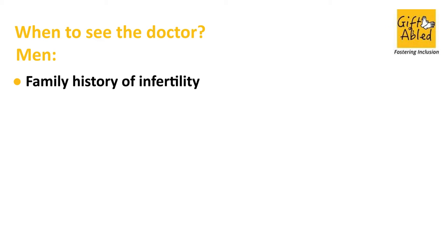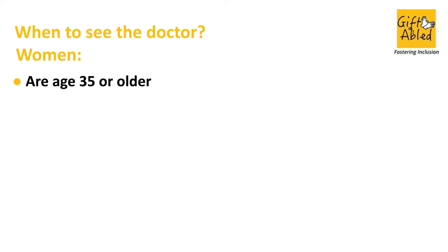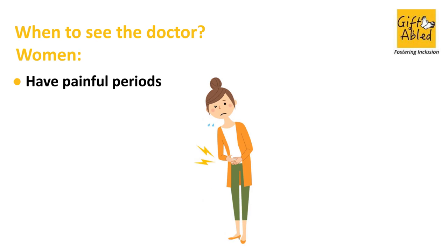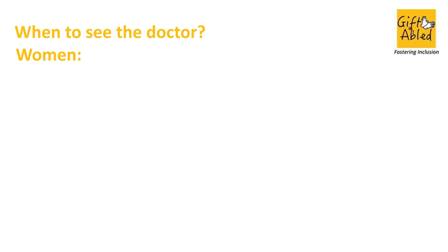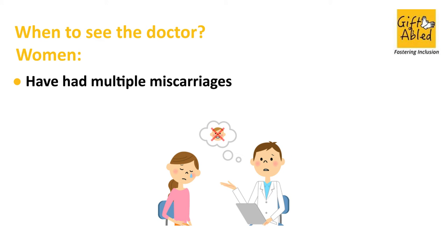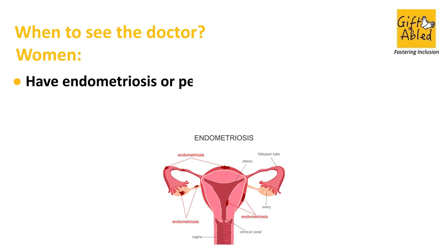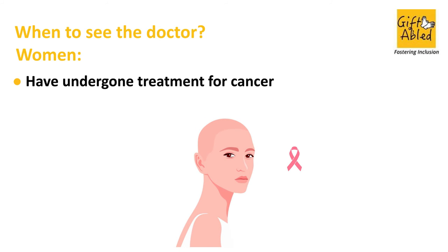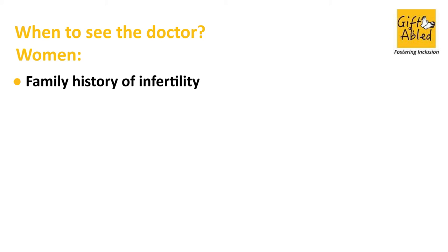When to see a doctor — women: you are aged 35 or older, have irregular or absent periods, have painful periods, have had multiple miscarriages, have endometriosis or pelvic inflammatory disease, have undergone treatment for cancer, or have a family history of infertility.